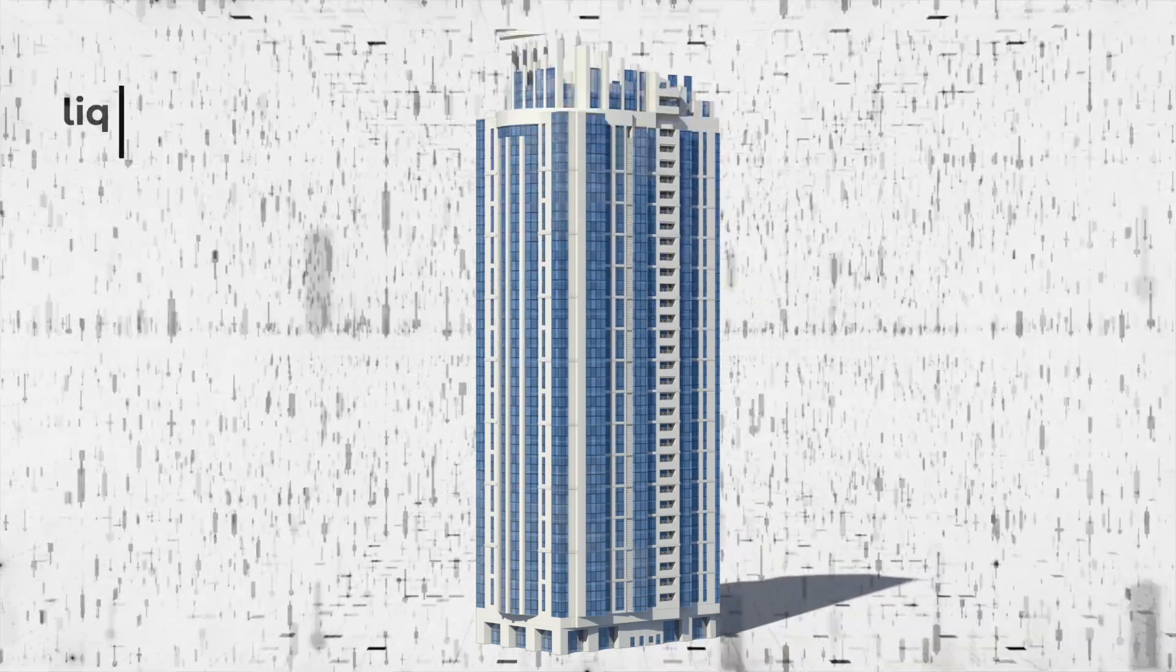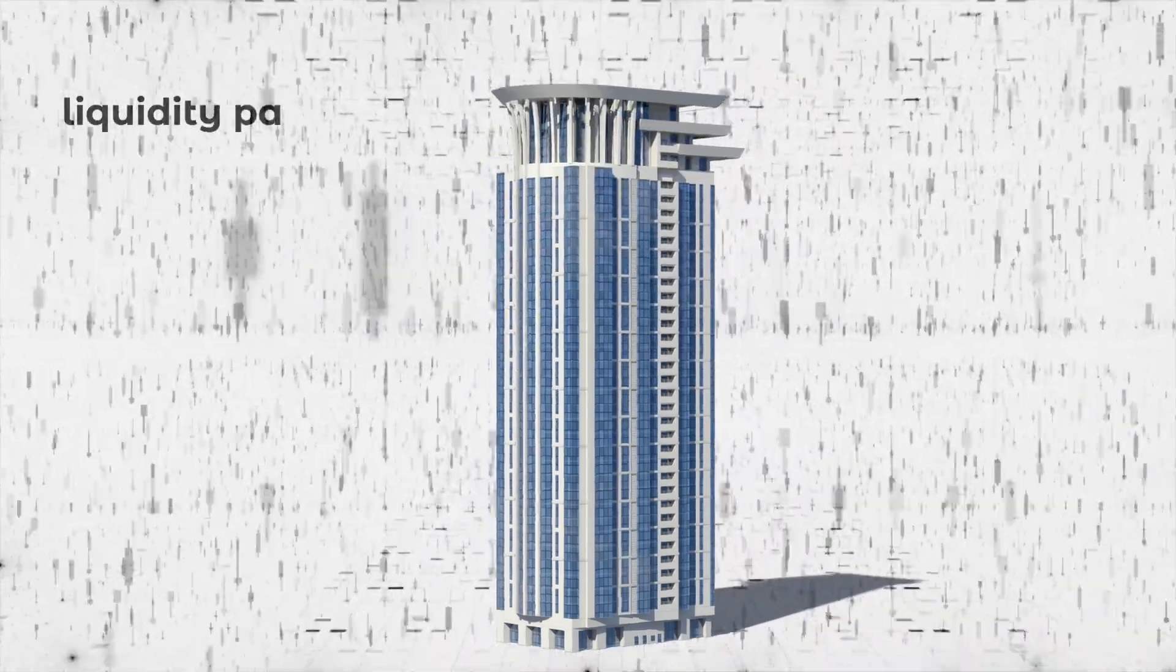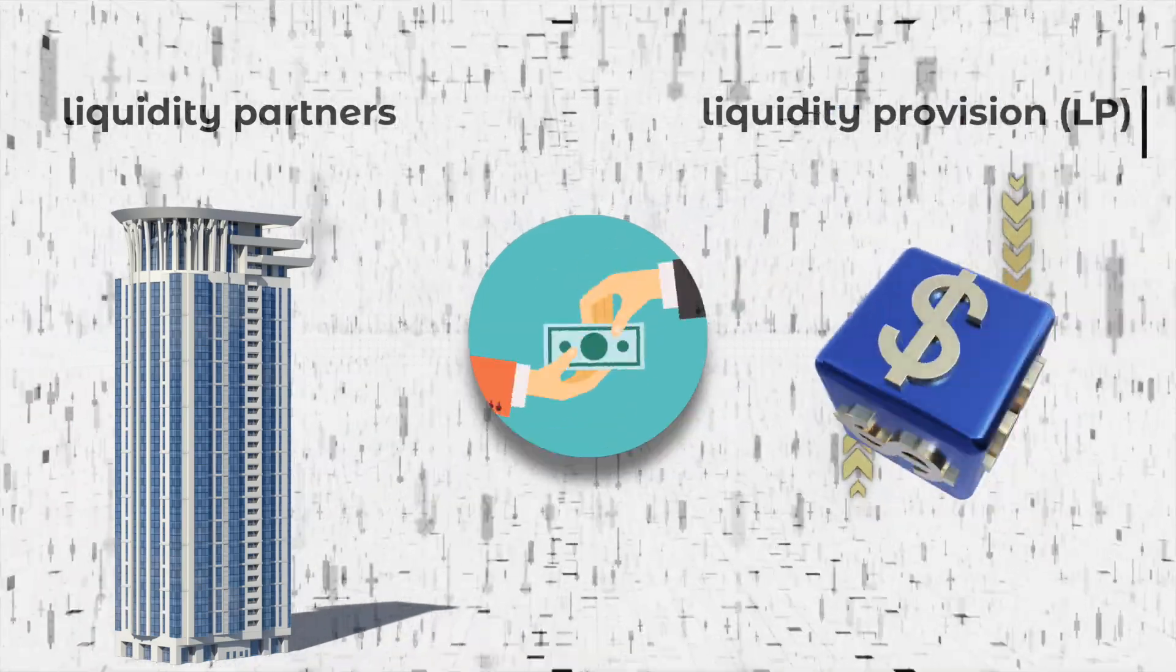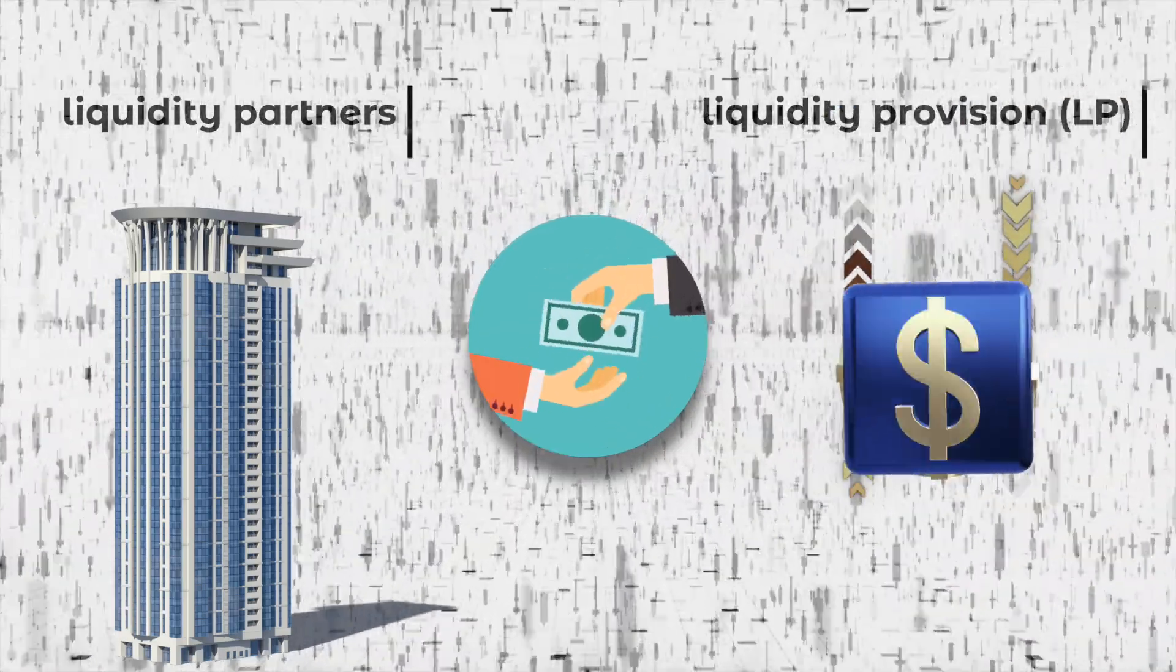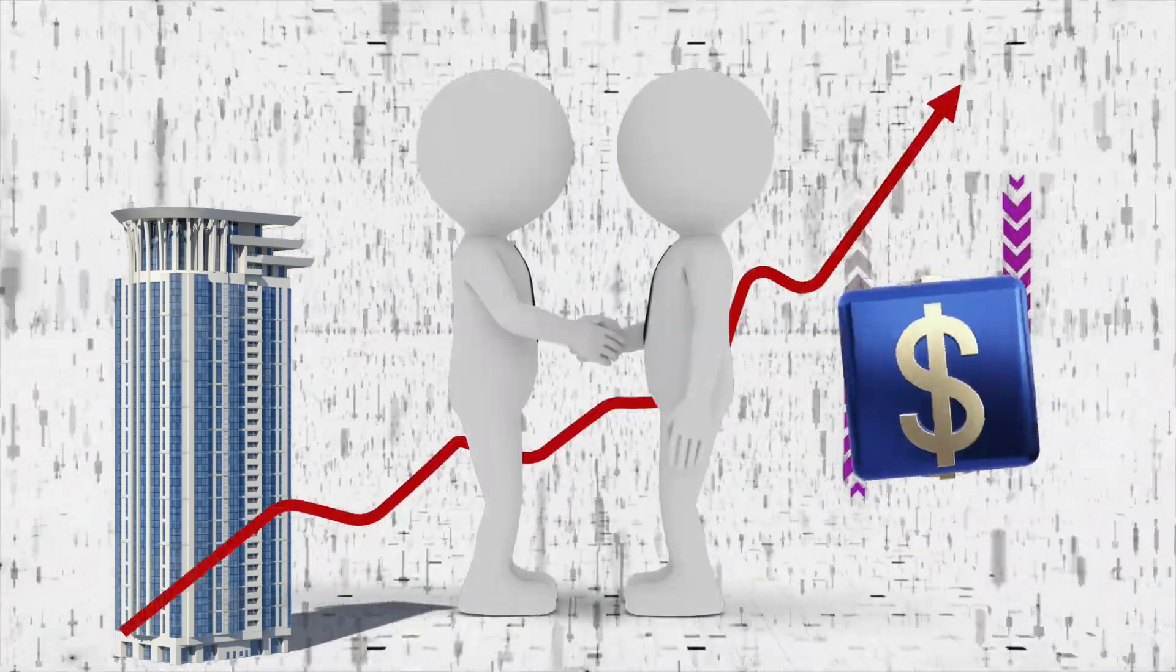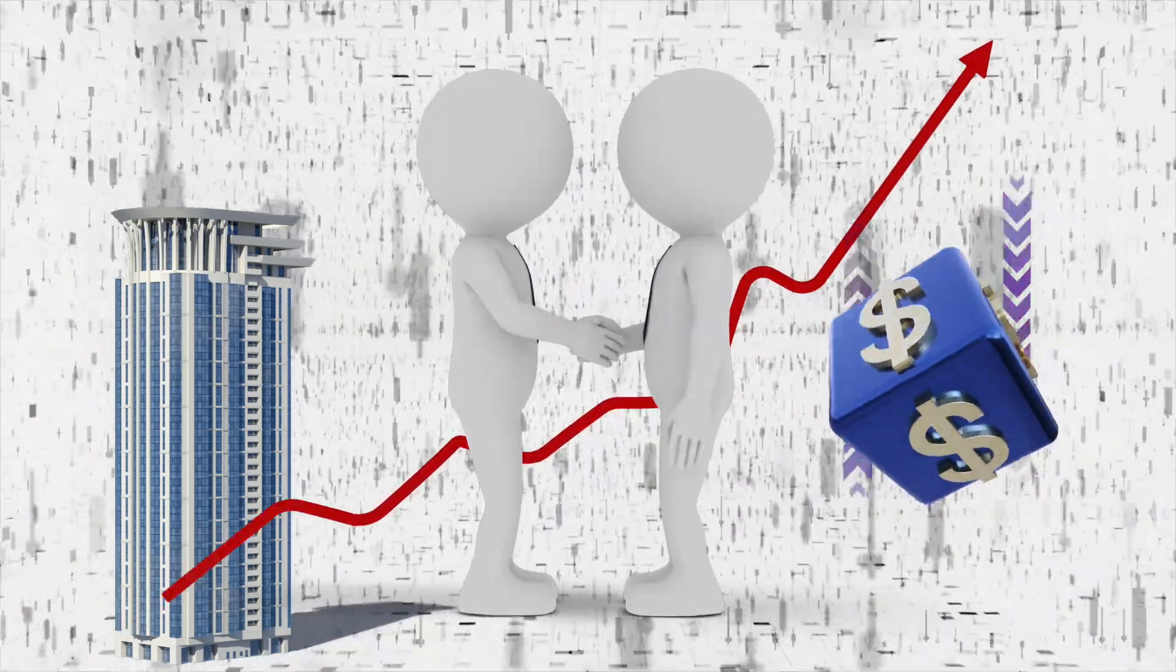Liquidity is provided by key institutions called liquidity partners. They provide liquidity in what is called liquidity provision, or LP. These liquidity partners earn from both sides of the trade. Why? Because thanks to their liquidity, these trades were possible.